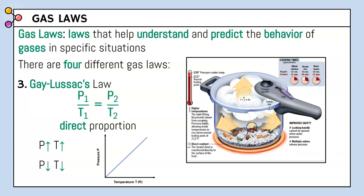We see Gay-Lussac's Law in pressure cookers: increasing the pressure inside increases the temperature to cook food. Going back to car tires — if it's super hot outside, pressure increases, collisions increase, and the tire expands so volume goes up. The same idea applies in reverse when it's colder.